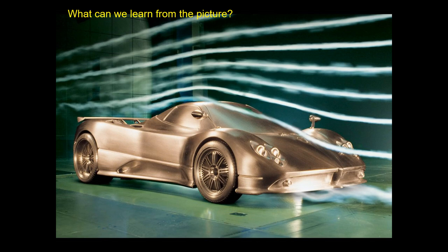Here we're looking at a picture of a car in a wind tunnel. There's a surprising amount of information we can gather from a photo like this. The wind is blowing from the front to the back — from the right side to the left — and you can tell because the streamlines follow the contour of the car.